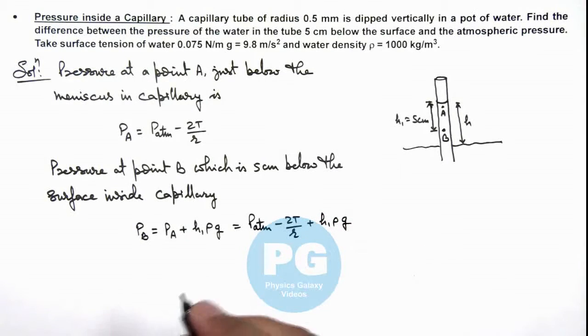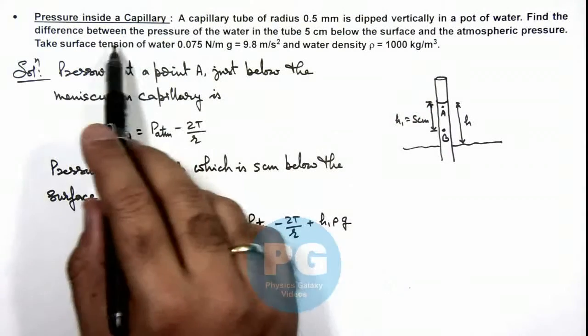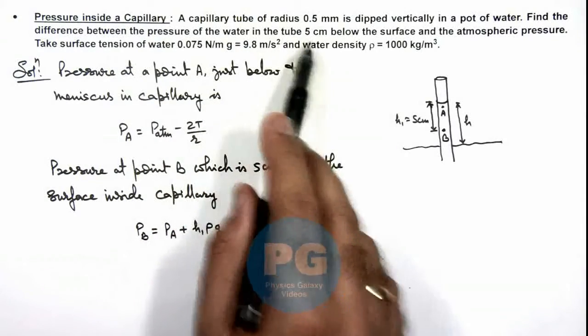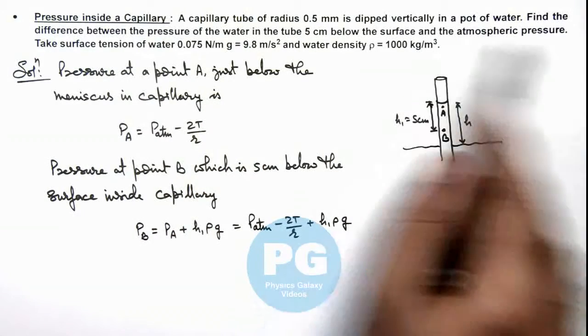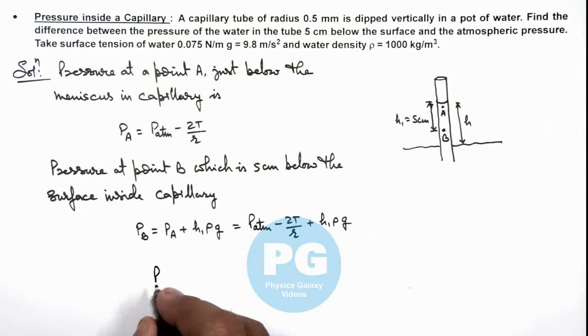So in this situation, we are required to find the difference between the pressure of water in the tube 5 centimeters below the surface and the atmospheric pressure. So if we calculate the value of difference of pressure ΔP between...